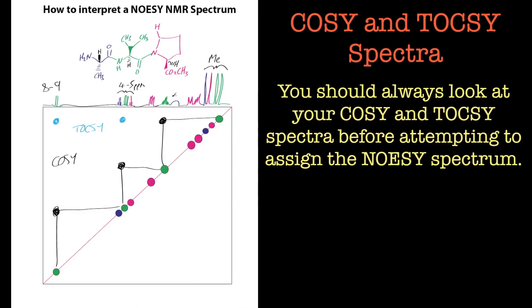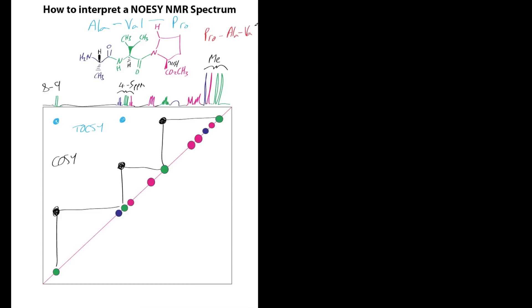Once we know where each amino acid comes in the spectrum, we can then see how it's connected to each other. We basically want to see if this alanine is connected to this valine, which is connected to this proline, and we want to see if it's connected in that order. We don't want, for example, this sequence, because that'd be a completely different peptide with completely different properties. It's really important to get the order right.